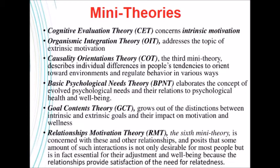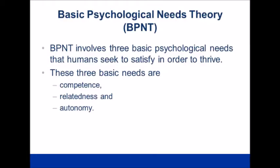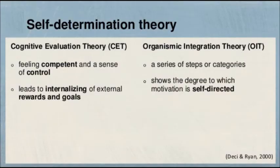I cannot explain all six theories in detail, but I will give an explication of three. Basic psychological needs theory involves three basic psychological needs that humans seek to satisfy in order to thrive: competence, relatedness, and autonomy. This theory was proposed in the context of human well-being and health. Cognitive evaluation theory deals with feeling competent and a sense of control, and leads to the internalizing of external rewards and goals.